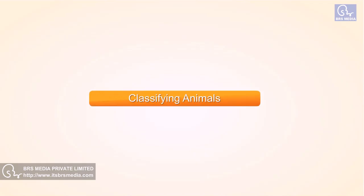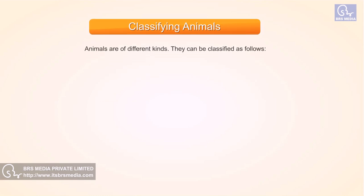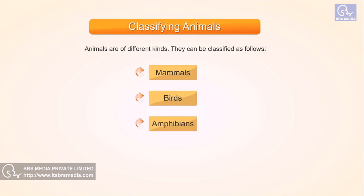Classifying Animals. Animals are of different kinds. They can be classified as follows: Mammals, Birds, Amphibians, Pisces, and Insects.